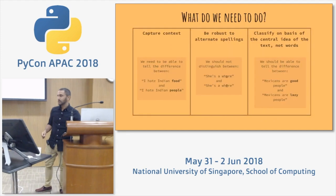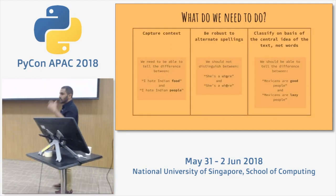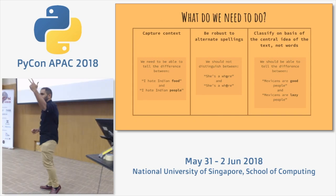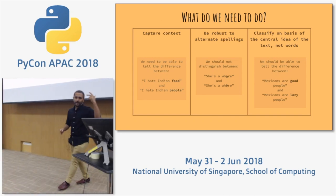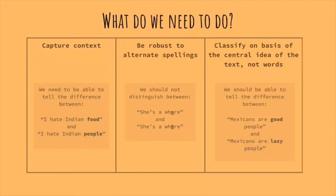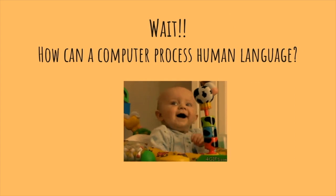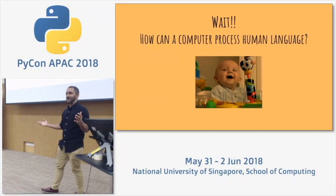So we have to look at something else. We need to capture context, be robust to alternate spellings, and classify on the basis of an idea — not just the utterances. These three things together mean we're trying to get a computer to understand human language.